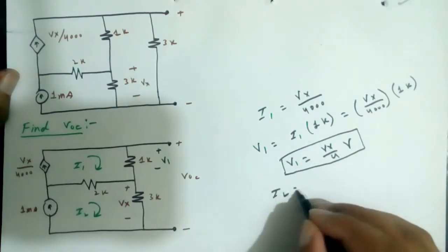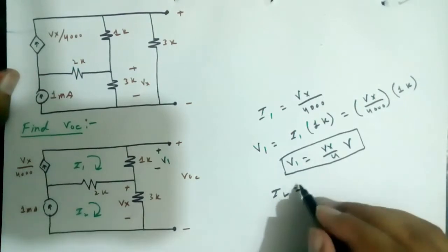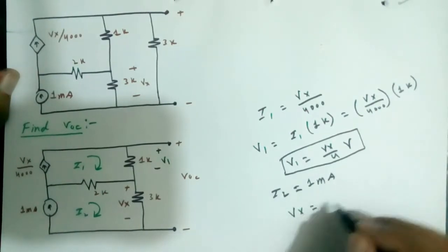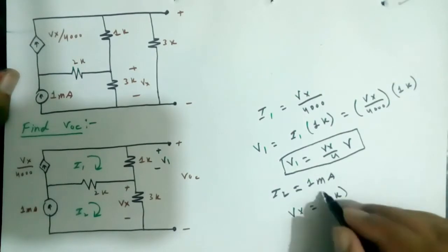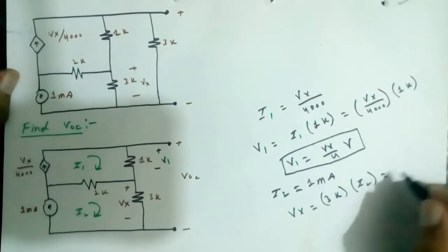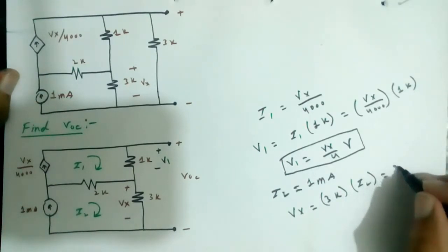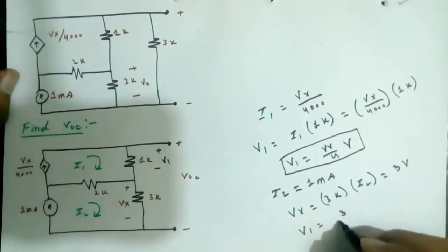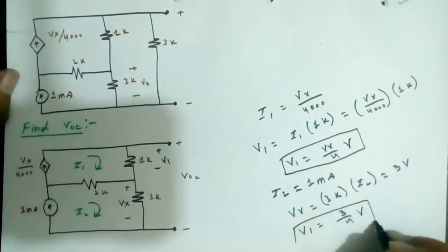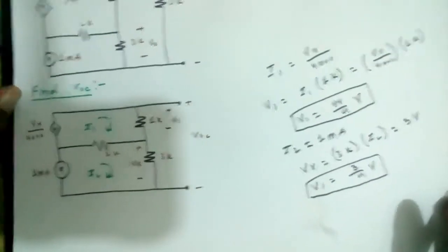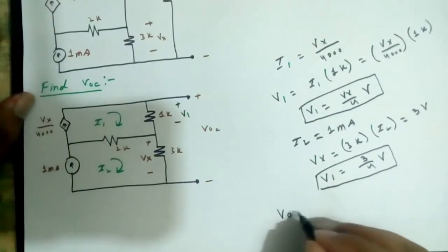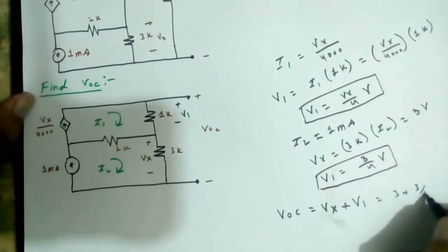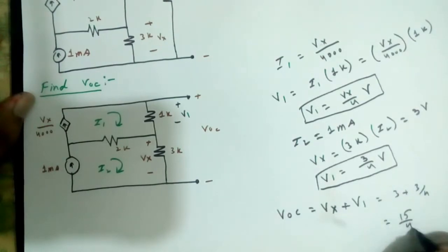I2 is equal to 1mA, so Vx is equal to 3k times I2, which equals 3 volts. Therefore Voc is equal to Vx plus V1, which equals 3 plus 3 over 4, equal to 15 over 4 volts. This is the open circuit voltage.